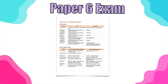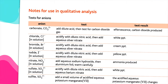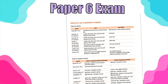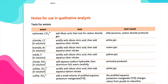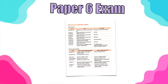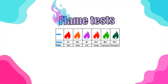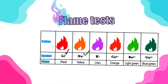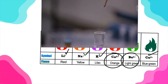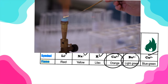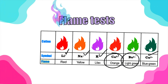Good news for 2023 students: the identification of ions and gases list used to need to be memorized, but now with the paper 6 exam, this list will be provided in the exam itself. You still need to learn how to use it, but you no longer need to memorize all the colors and fine details. For the flame test, the old syllabus covered lithium, sodium, potassium, and copper. Now calcium and barium have been added — but since the colors are given in the exam, you just need to match the flame color to the ion.